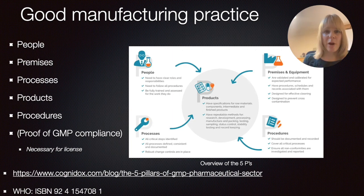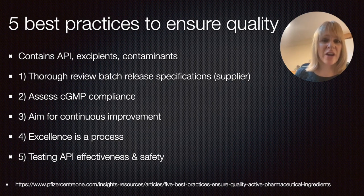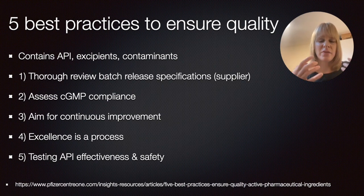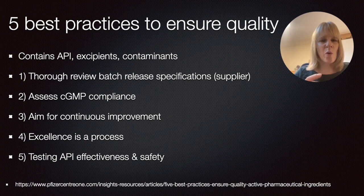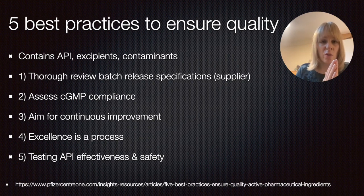If you want to know more, in the links below you can find additional information and guidelines from the World Health Organization. When we consider quality, we need to consider the whole product. We have the Active Pharmaceutical Ingredient, or API — though that's often only a very small component of the overall product. There are many other excipients that can be used, for instance to guarantee stability or sterility. We want to make sure there are no contaminants whatsoever, so you need to look across the board.